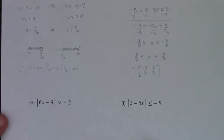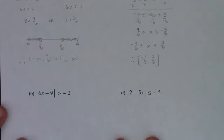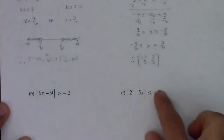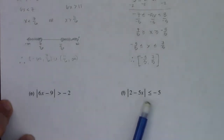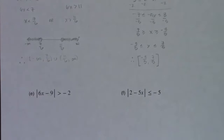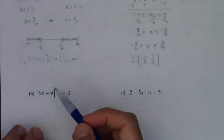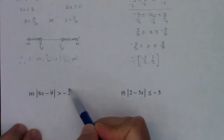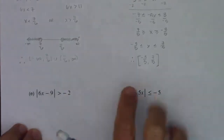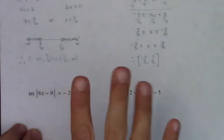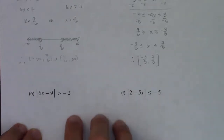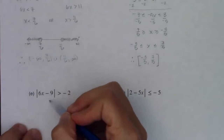Looking at examples e and f — you might wonder why I didn't leave much space. That's because once you recognize there's a negative number on the right side of the absolute value inequality, something special is happening. We haven't seen negative numbers on the right side until now. Think about what comes out of an absolute value — it's always positive or zero, never negative.